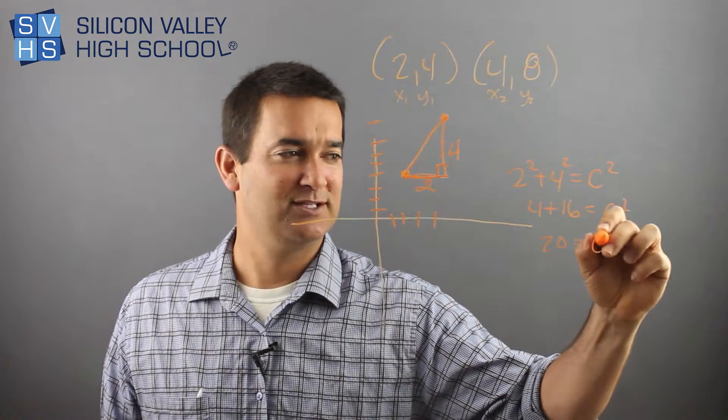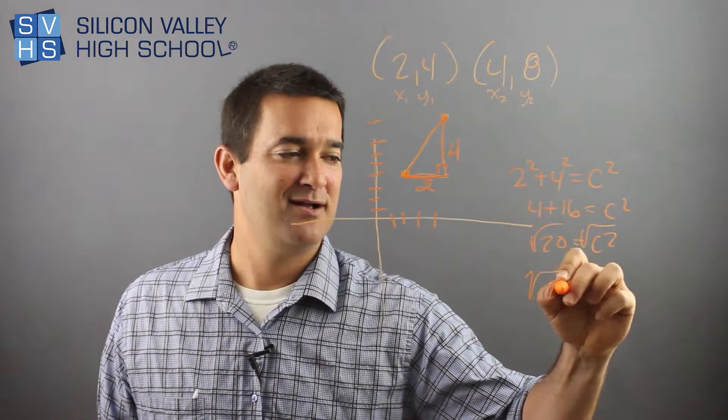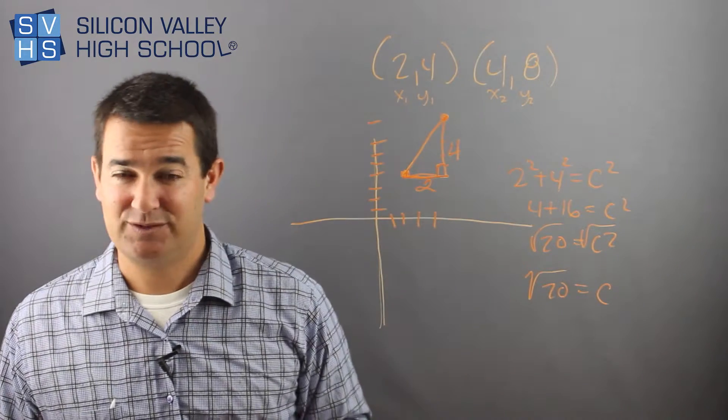That is 4 plus 16 equals C squared. That means that's 20 equals C squared. C squared, root both sides and voila, you have the distance, which is root 20.